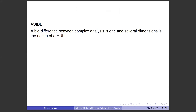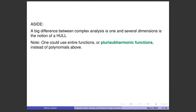The enticing fact is that when K is a curve, there is complex analytic structure in the polynomial hull minus K — very unexpected at the time. One of the big differences between complex analysis in one and several dimensions is the notion of a hull. You could substitute entire functions or plurisubharmonic functions defined globally for the polynomials and get the same hull.